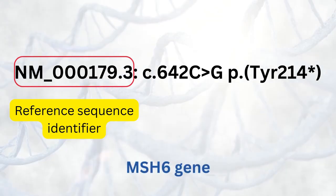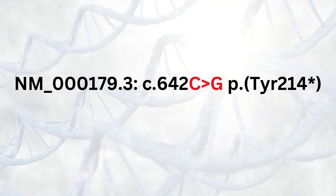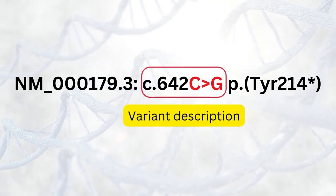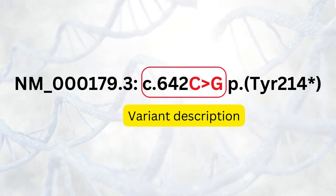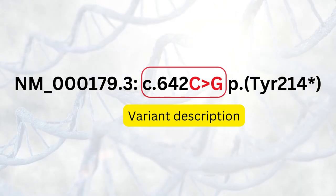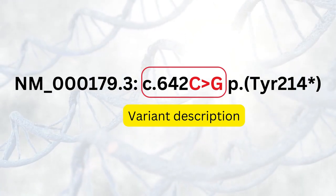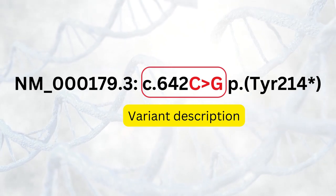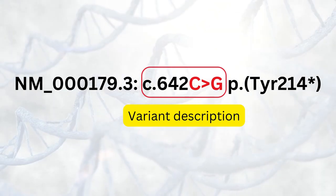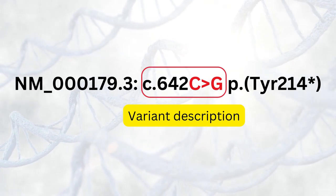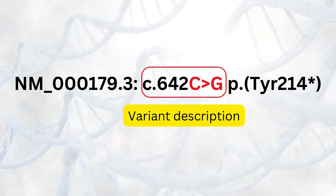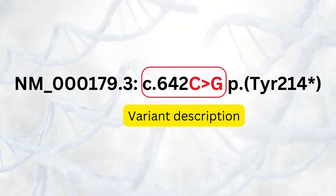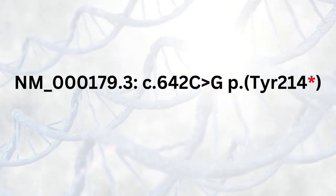In this case, the transcript ID refers to the MSH6 gene. The second part is the variant description, which describes what change has occurred in the transcript. It can be represented as a genomic change (G) or more commonly a coding sequence change (C). For example, MSH6 c.642C>G means that at position 642 in the reference transcript, a guanine has replaced the expected cytosine.